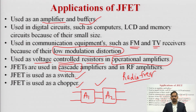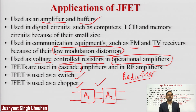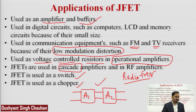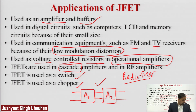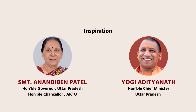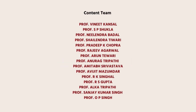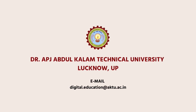This concludes the topic of JFET. In the next lecture we will see what MOSFET — metal oxide semiconductor field effect transistor — is basically, and why MOSFETs are advantageous compared to JFET. We will see the differences between MOSFET and JFET and why MOSFETs are more preferred over JFETs. These are the references. Thank you.